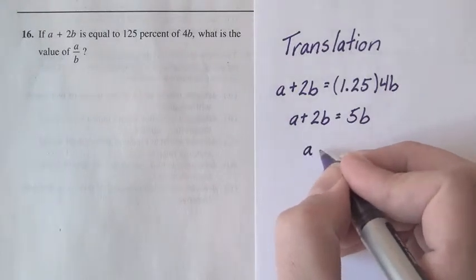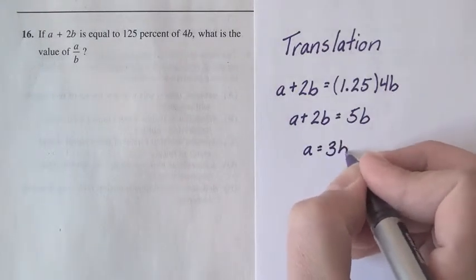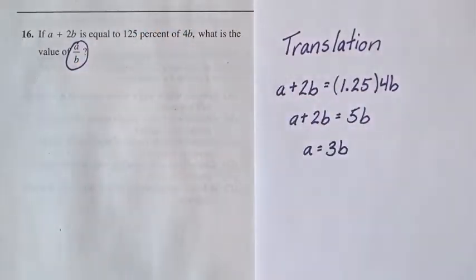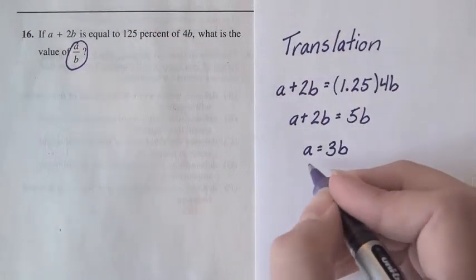Subtract 2b from both sides. And then since the final thing we want to get is a over b, let's turn the left-hand side into a over b by dividing both sides by b.